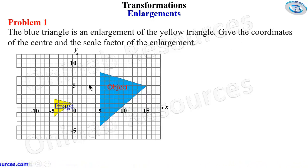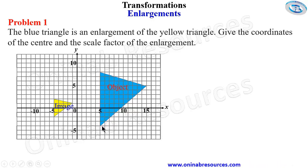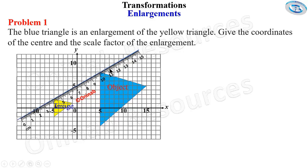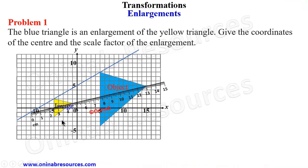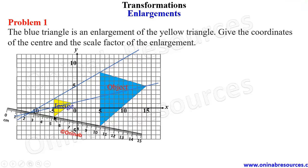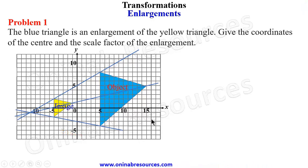To find the center of enlargement we join the corresponding vertices. This vertex corresponds to this vertex, this to this, and this to this. We draw lines joining them and extend the lines. Place your ruler and draw each line, making sure all three lines meet at the same point. That point is C, the center of the enlargement.